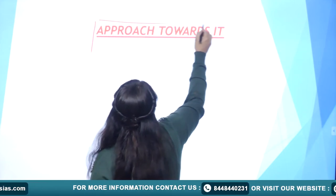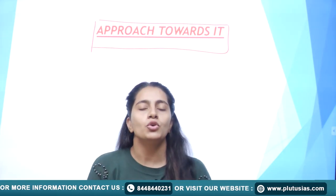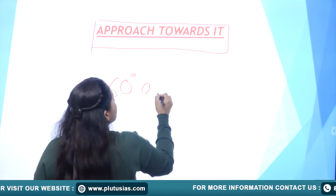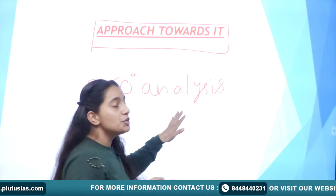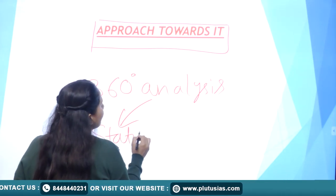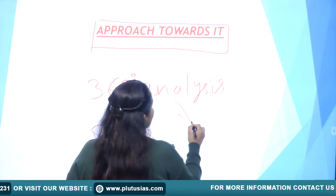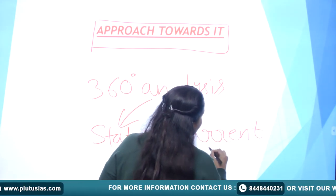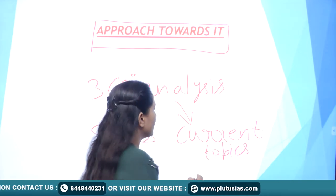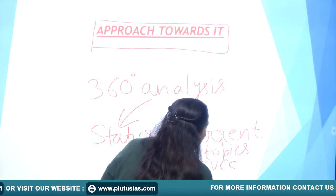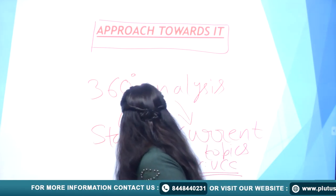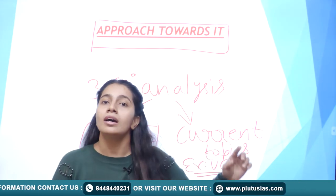Our next topic is the approach towards current affairs. What should be your approach when you prepare? You should have a 360-degree analysis — analysis of your static portion which you covered in your classes, and then your current topics which you might see in your newspapers and television. For example, recently UCC was very much in the news, so when you heard about UCC, you must think that it is also important for your static portion as well as your current portion.